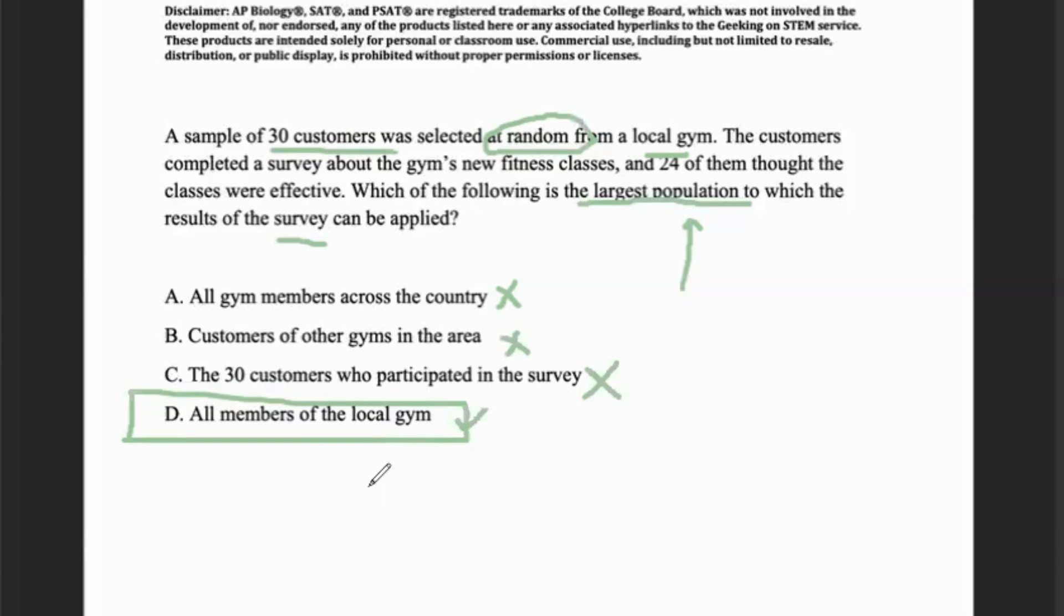Now I just want to also conclude that you can change this type of question around to other surveys that you can give to other locations. They can change the question around and say that it's a school, or a group of co-workers, or maybe a squad. So if you see problems similar to this where they're talking about a group of people and they're asking for the largest population that can be surveyed, please note that the answer choice for that question would be all members of that specific group that they're surveying.